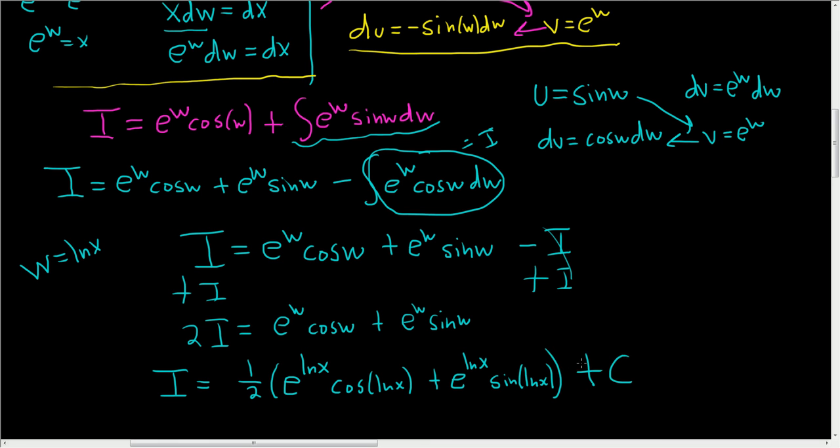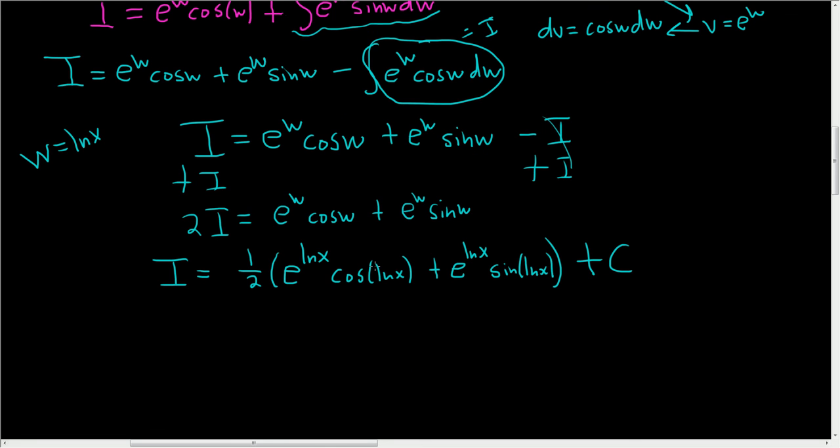And it looks like we can actually do something else. Wow, I hadn't done this problem before making this. So i is equal to one half. And then e to the natural log of x. That's just x. Nice. And this is the cosine of the natural log of x plus. And then here again, we get x. Wow, that worked out really nicely. Sine, natural log of x. And then we have the plus c on the outside.